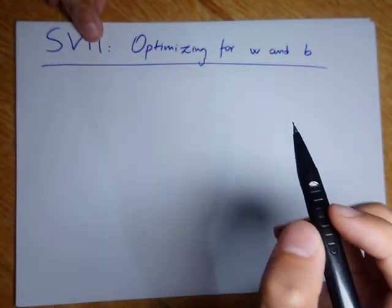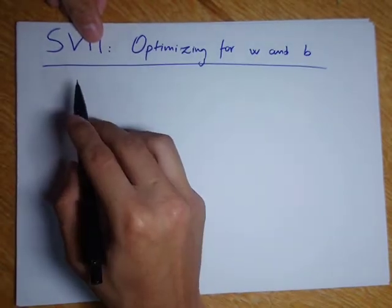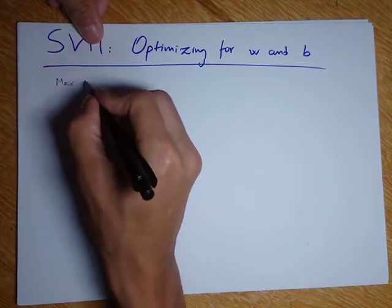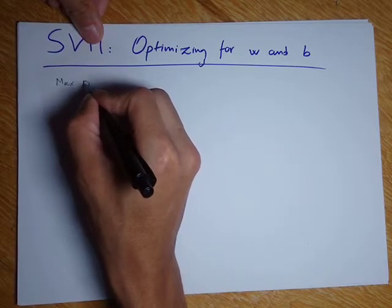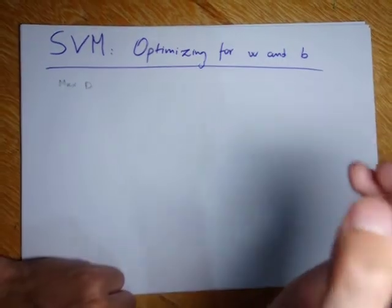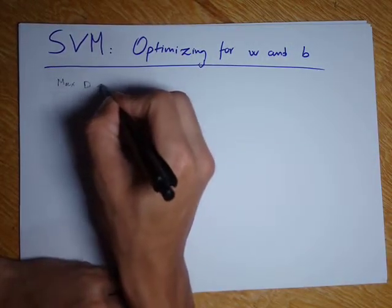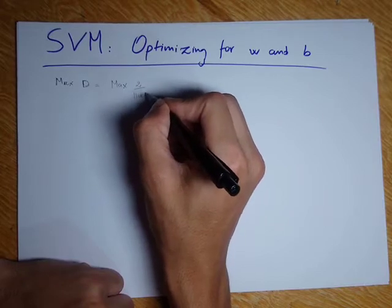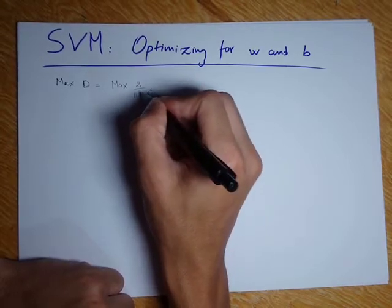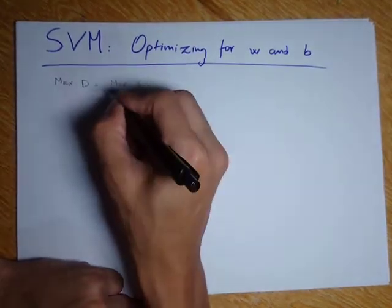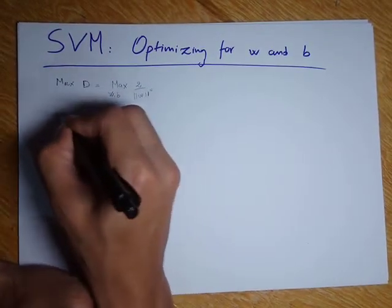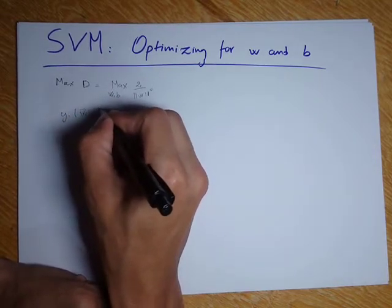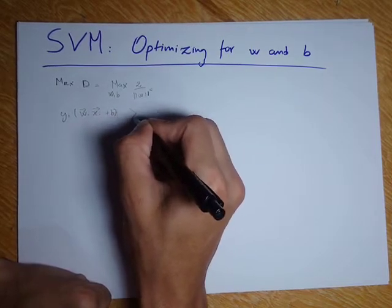The previous optimization problem we ended up with for SVM was this: we wanted to maximize the width, or the margin. The expression of this margin was D equals 2 divided by W. And we want to maximize this expression for W and B. We had a constraint: y sub i multiplied by W dotted with x_i plus B should be greater than or equal to 1.